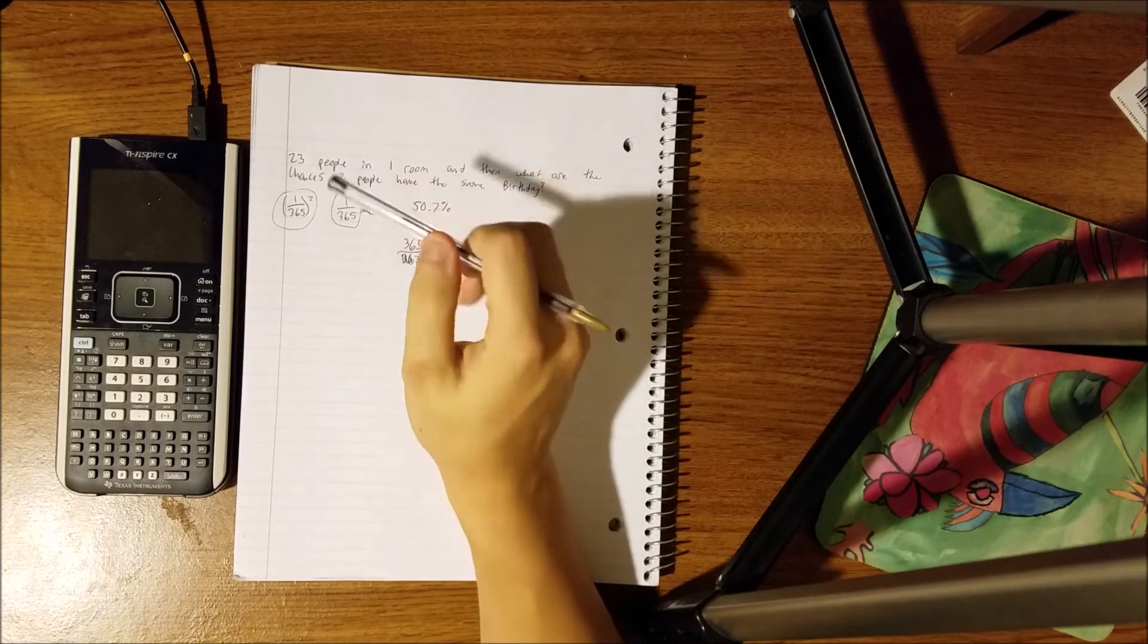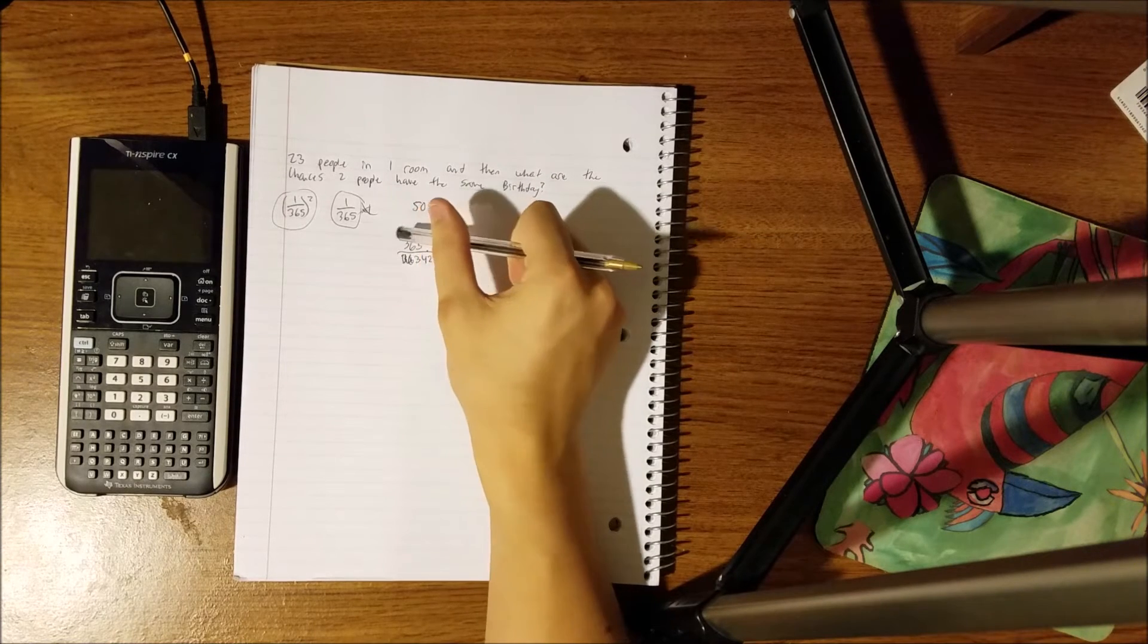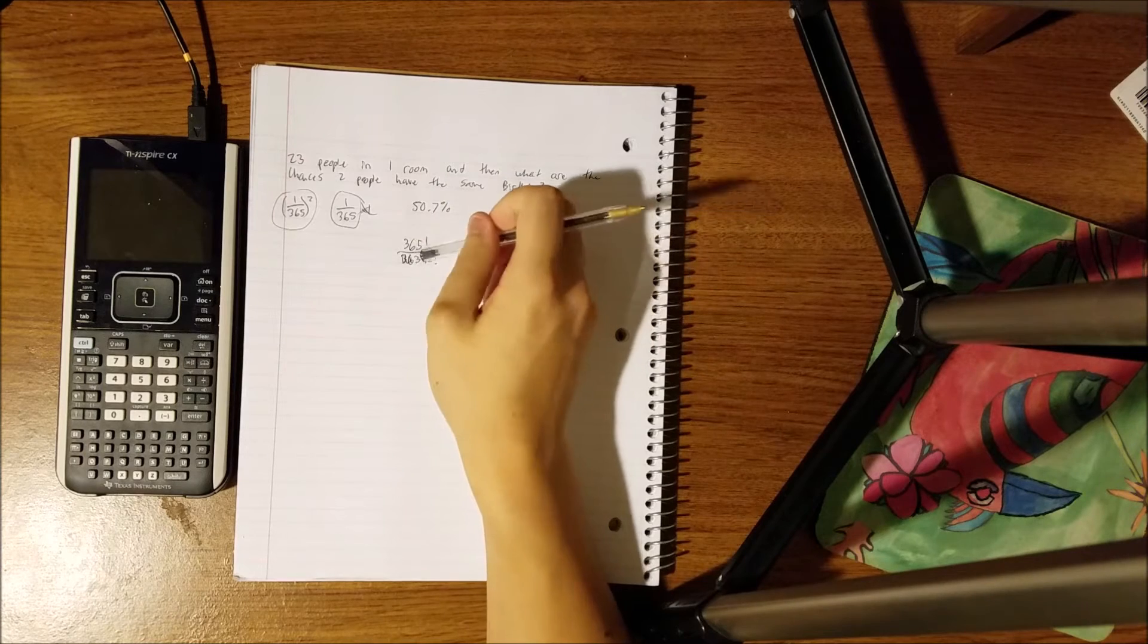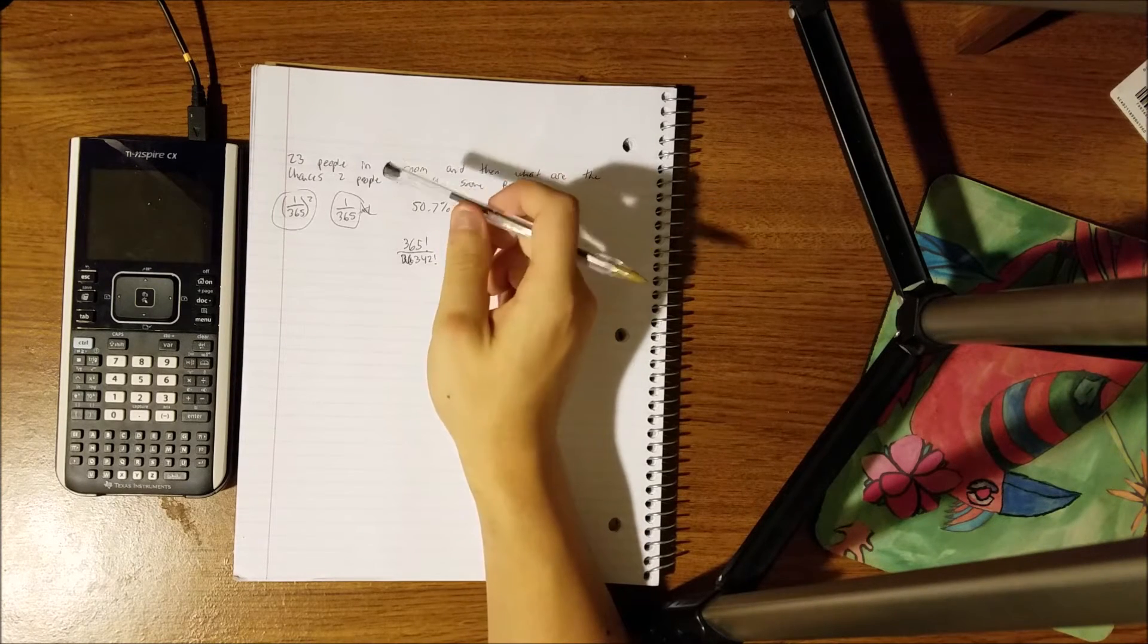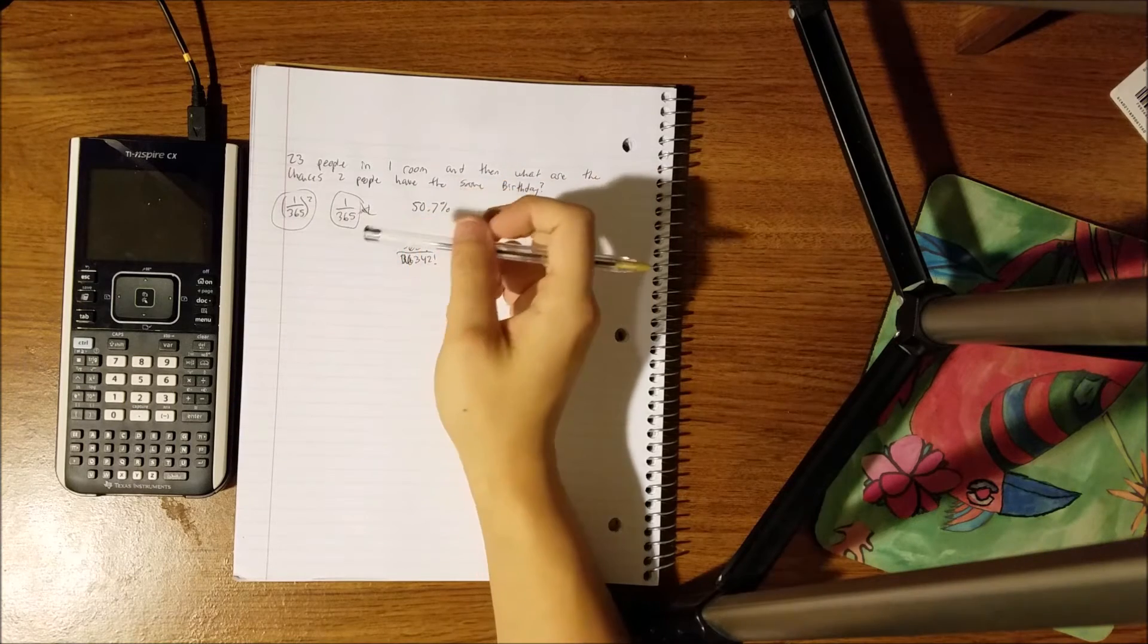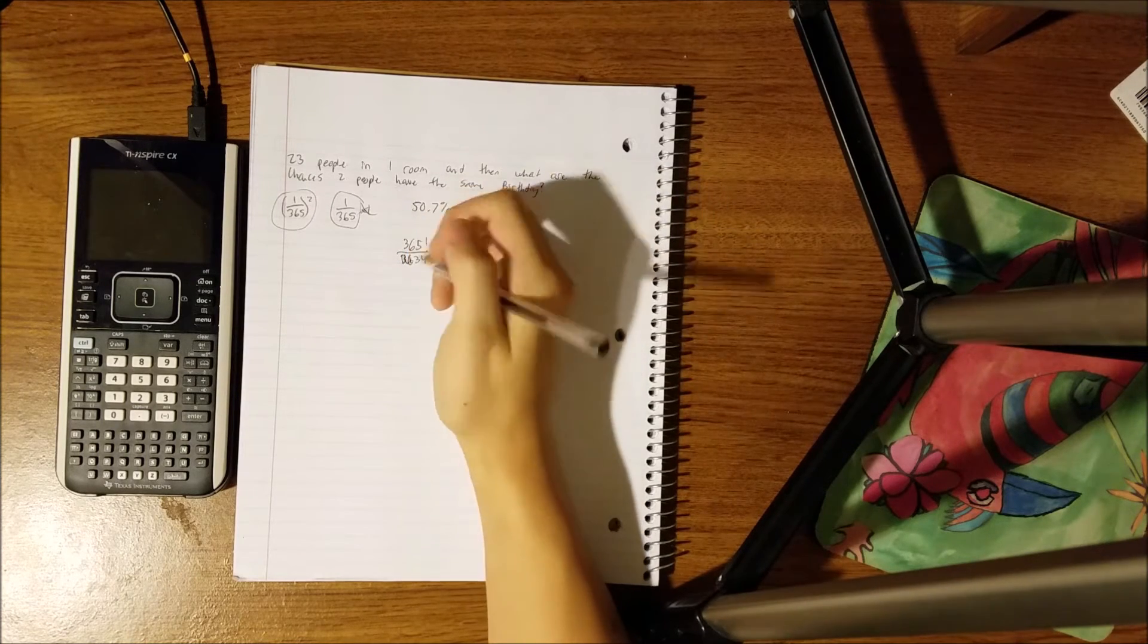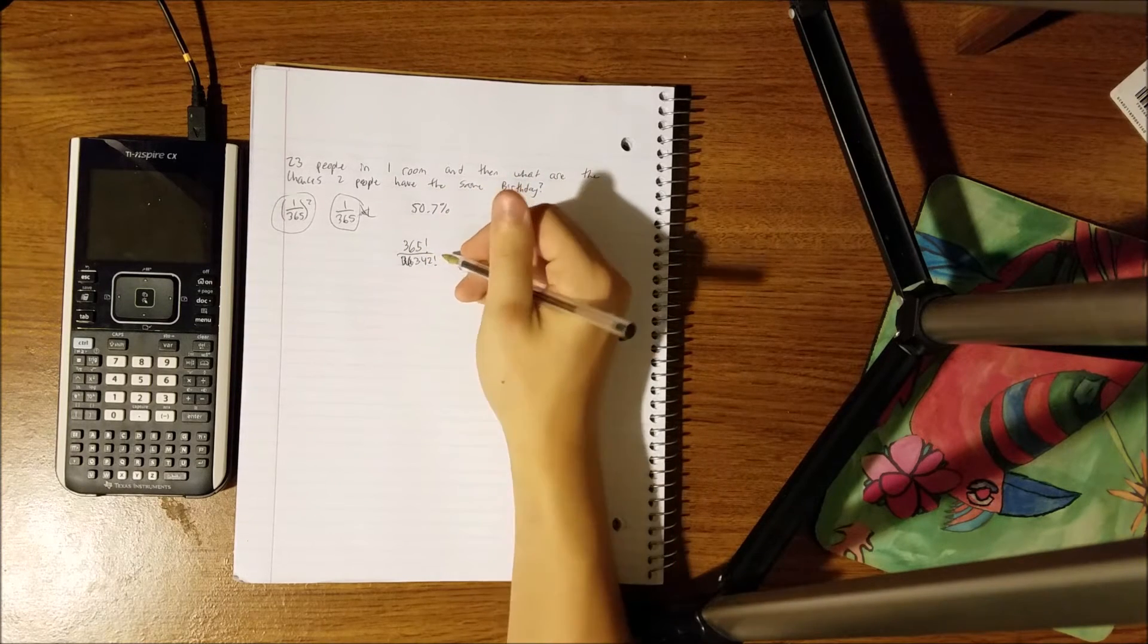and that is because 365 factorial is all the possible birthdays, and then 342 factorial would be that nobody had those birthdays. That's saying that from 365 to 342, no one had the same birthday through those, so that would be 23, so 365 minus 23 is 342,